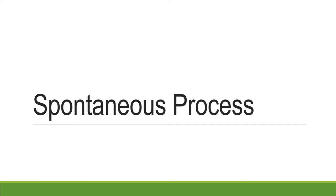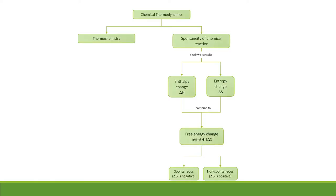Sawat dee ka. Now we come to the second part of chapter 5. We are going to learn about spontaneous processes. Chapter 5 is about chemical thermodynamics. We talked about thermochemistry in the first part already.